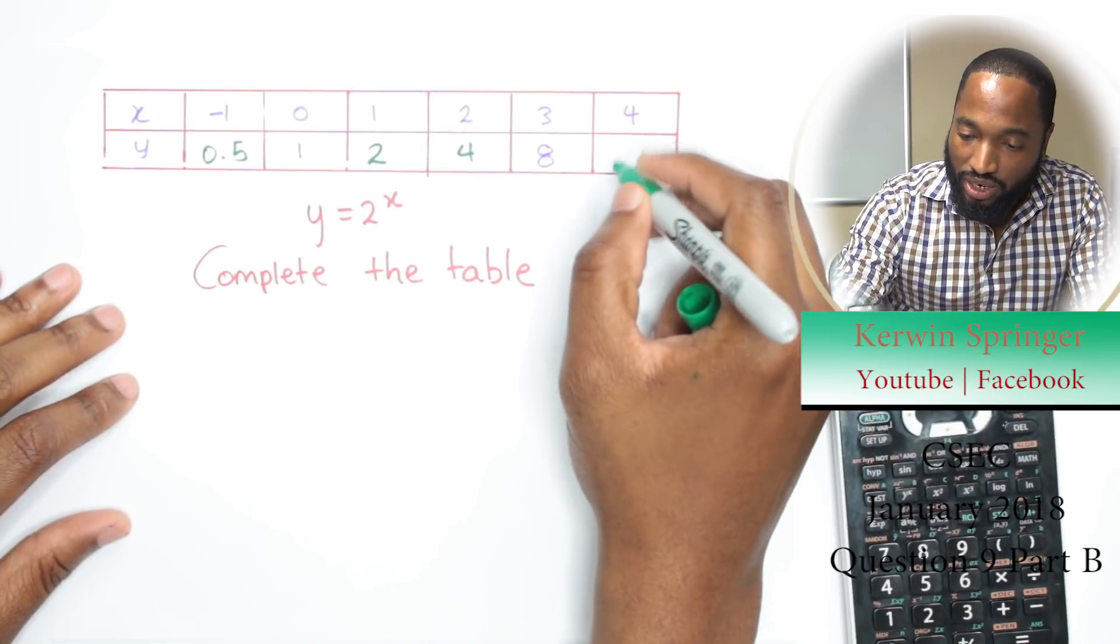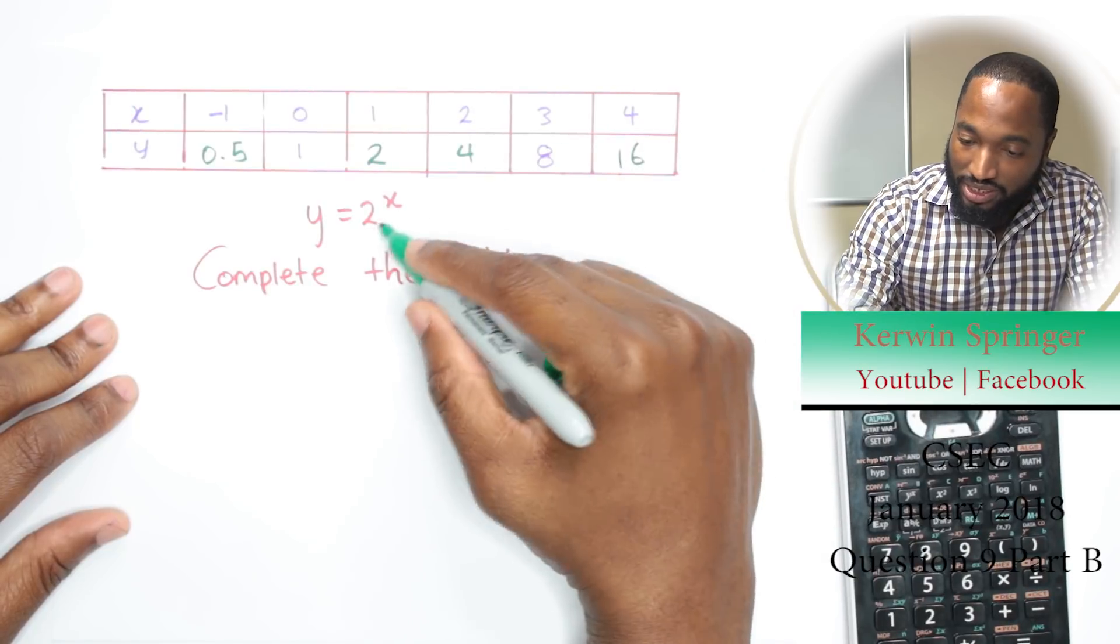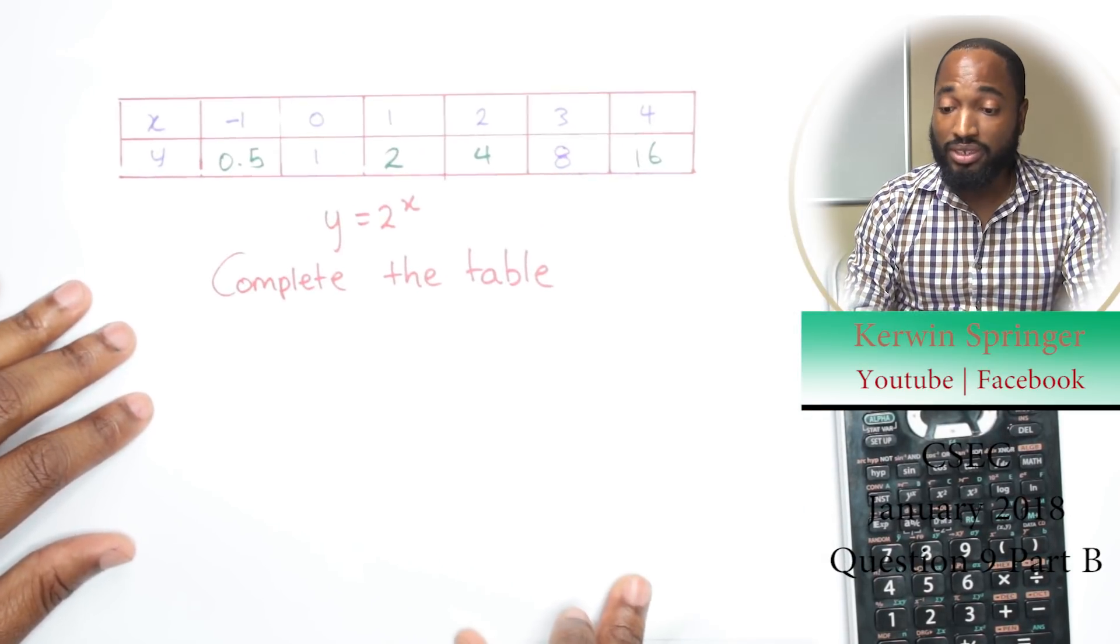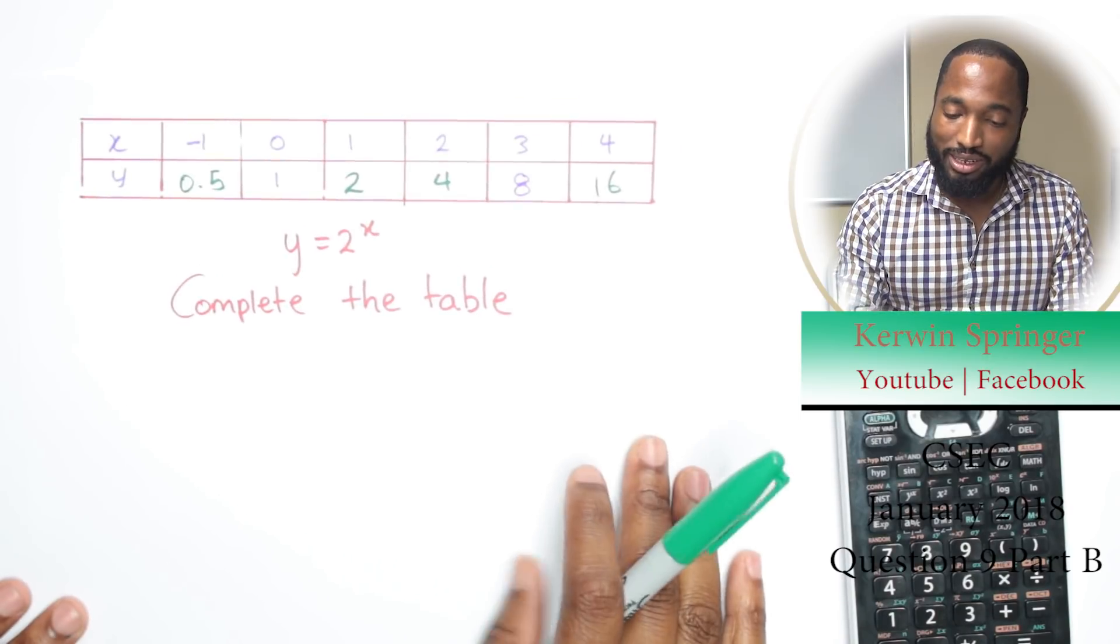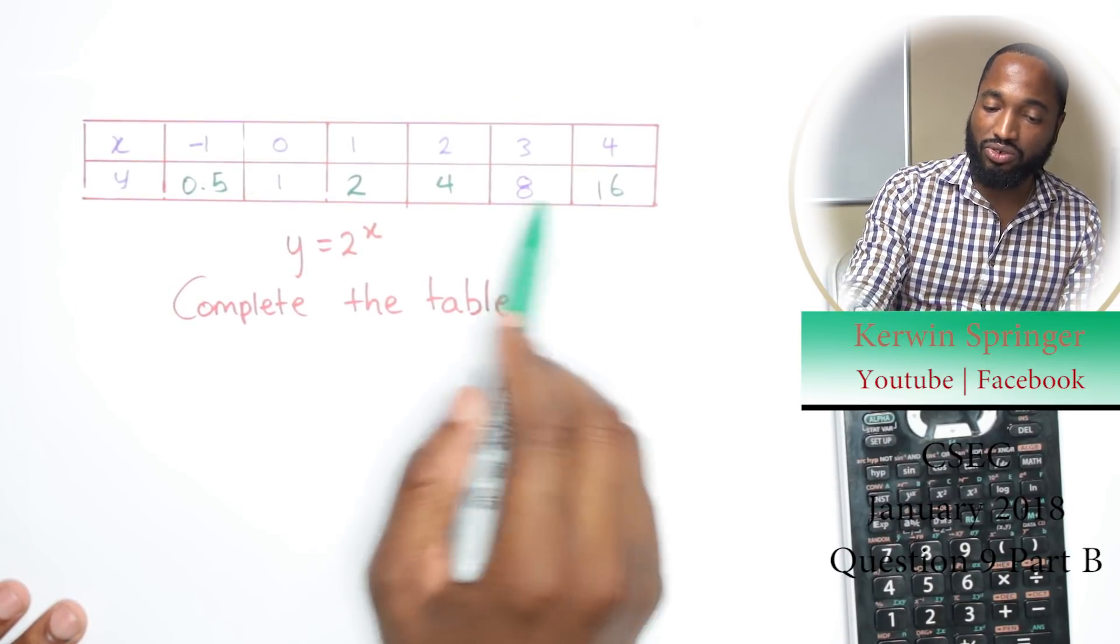1 times 2 is 2, times 2 is 4, times 2 is 8, times 2 is 16. So this is 16 because this is 2 to the power of 4. Table done, 2 marks collected, 3 marks total.